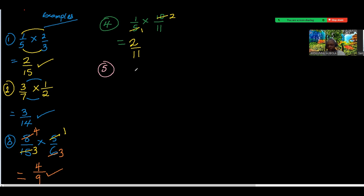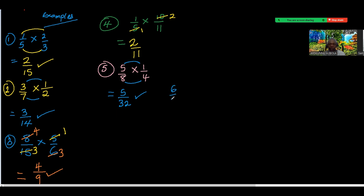Number five: 5 over 8 times 1 over 4. Is there any number common to both top and bottom? There is none. So just multiply: 5 times 1 is 5 and 8 times 4 is 32, giving 5 over 32. If it were 6 over 32 we could reduce to 3 over 16, but since it's 5 over 32 we can't reduce it.